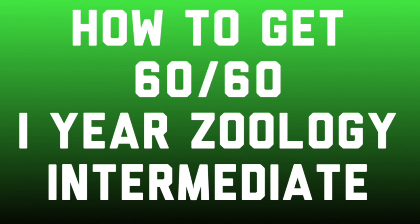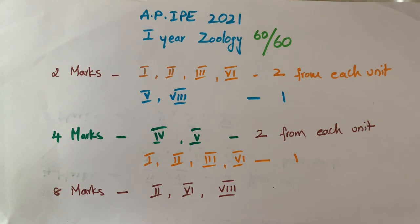Revise the chapters smartly to get 60 out of 60. Watch this video till the end to get 60 out of 60. To score 60 out of 60 is simple if you plan like this.